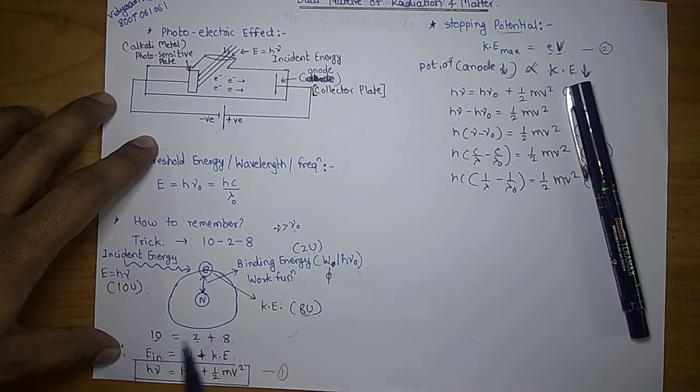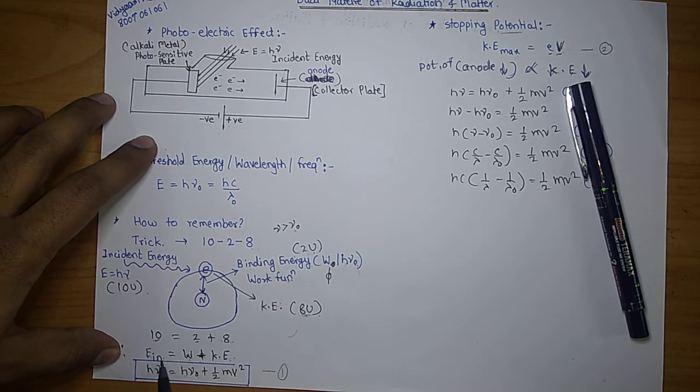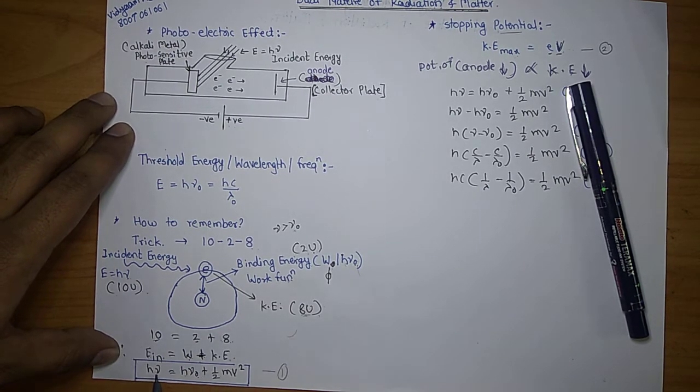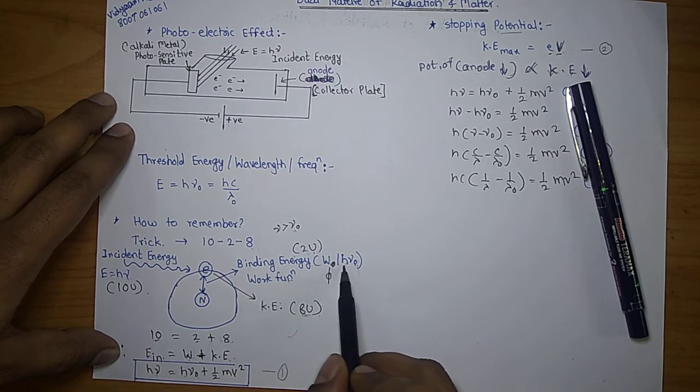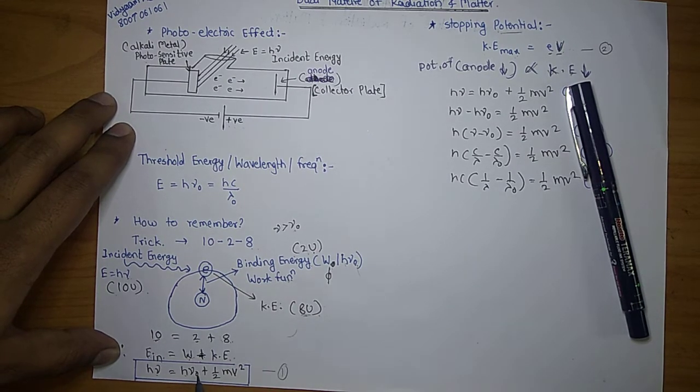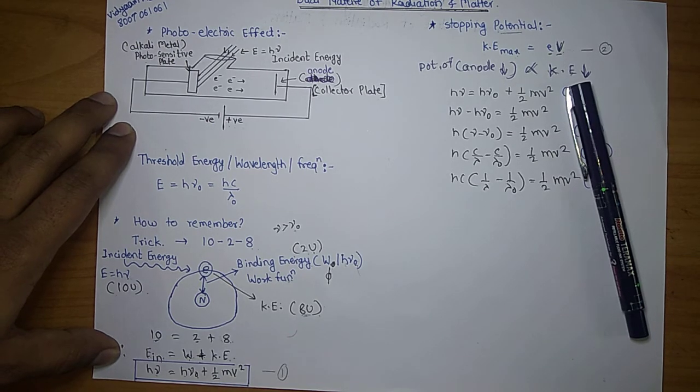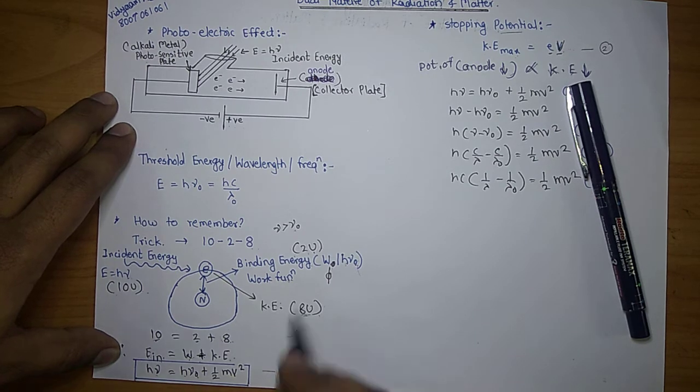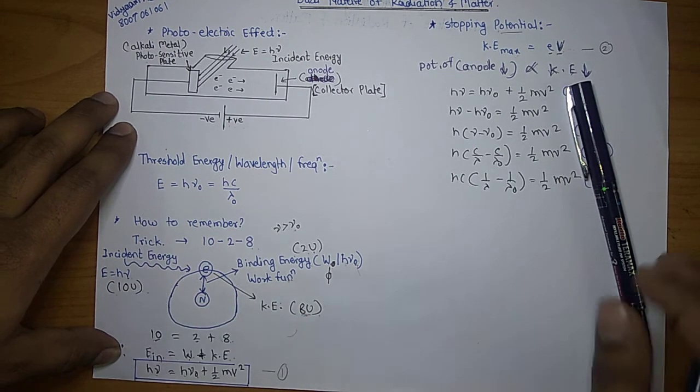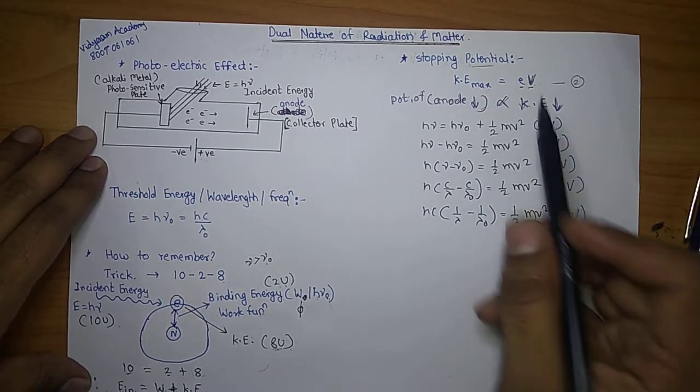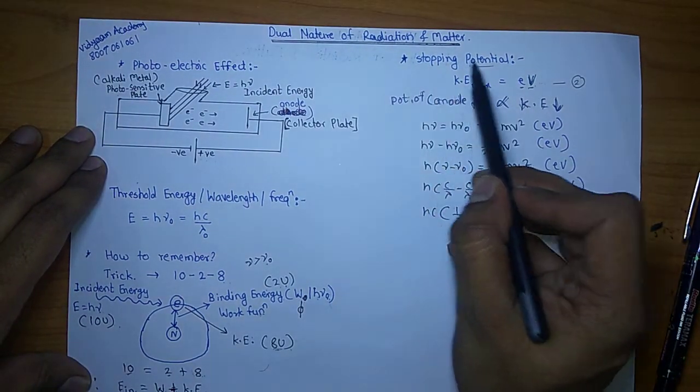By utilizing the trick of ten, two, and eight, you can write a simple formula: E incident equals W plus kinetic energy. What was E incident? E incident was H nu, so I can write H nu. What is W? W is nothing but H nu not plus some kinetic energy. Kinetic energy formula is one-half MV squared, correct. So in this way, by using this trick, you can develop the formula. Now for further understanding we will go to the next point, that is stopping potential.